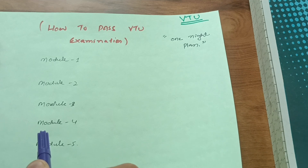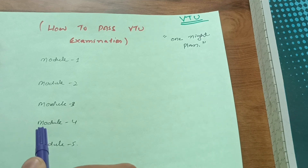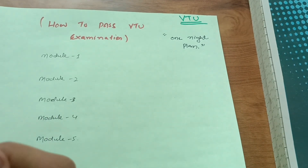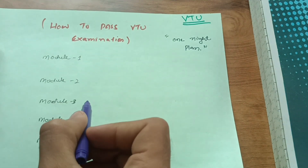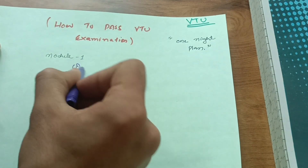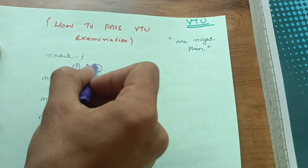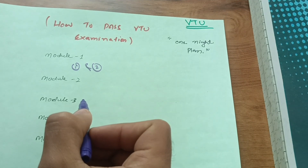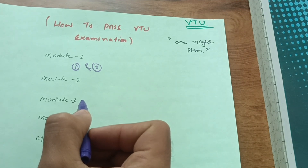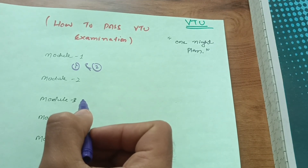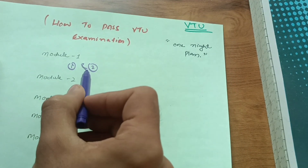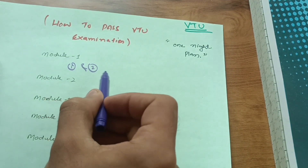This is for 2021 and 2022 scheme students. In each module, as you already know, there are two chapters — first and second. Sometimes there are three chapters in a module, but most probably there are two chapters in each module.